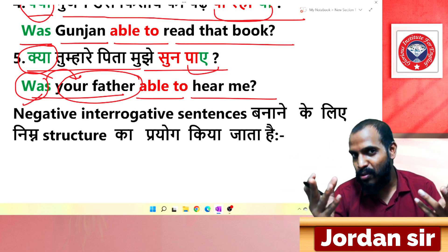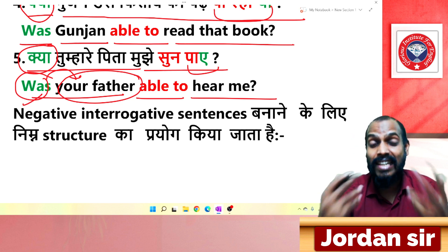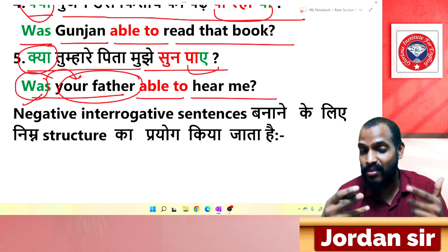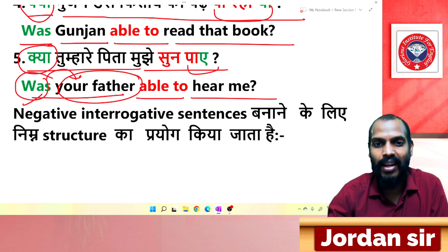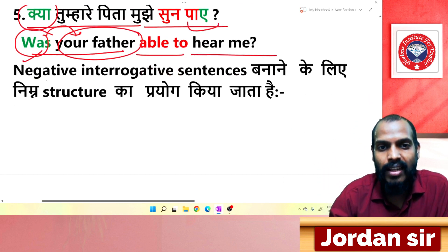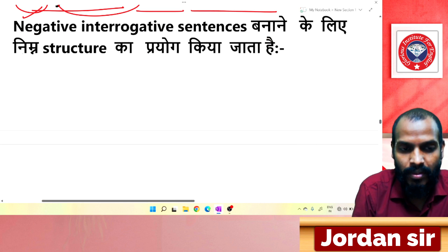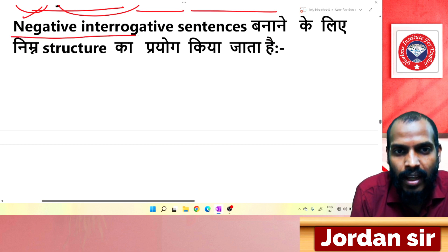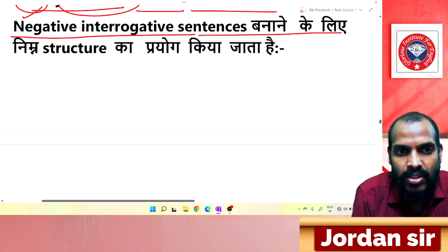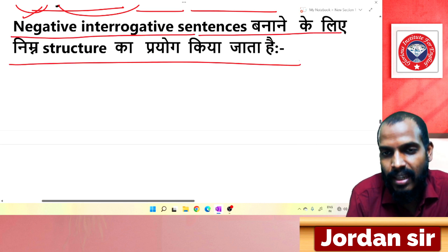By now you should understand how to form interrogative sentences in the past tense with 'able to'. Now let's look at negative interrogative sentences.